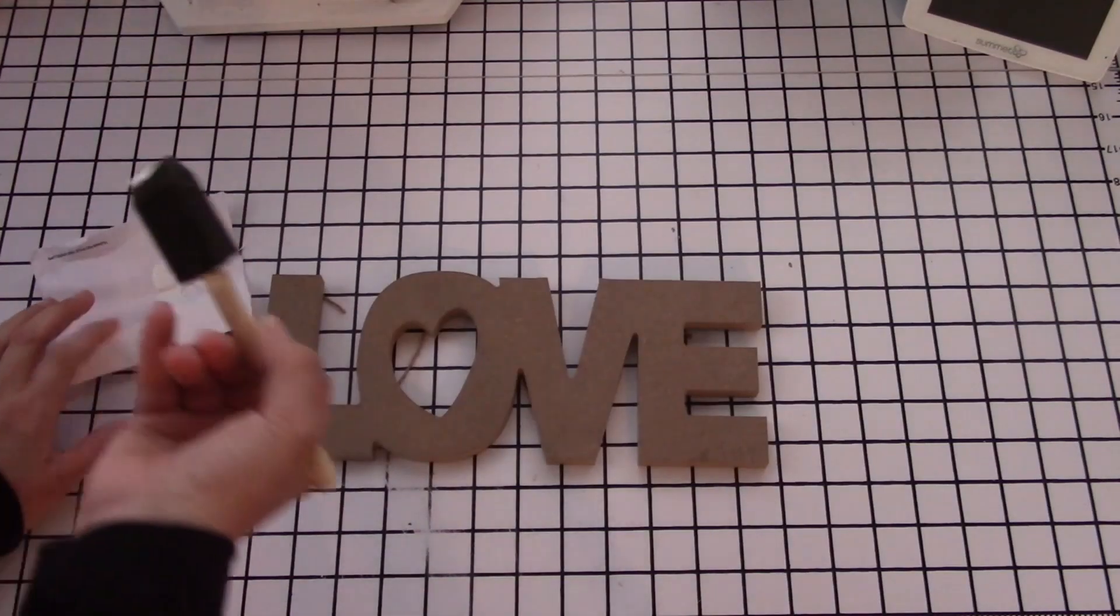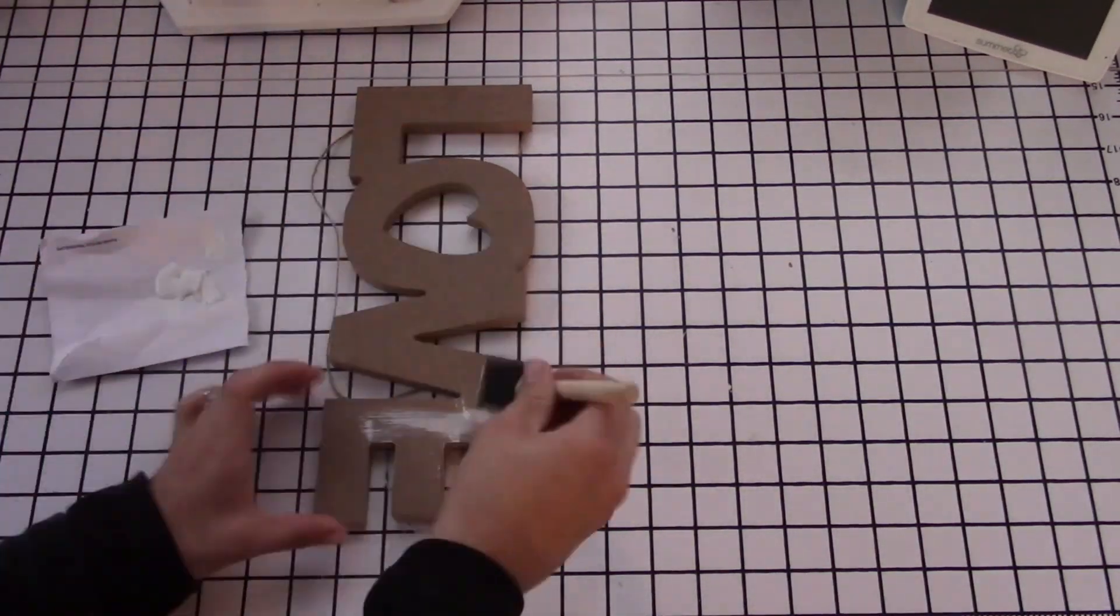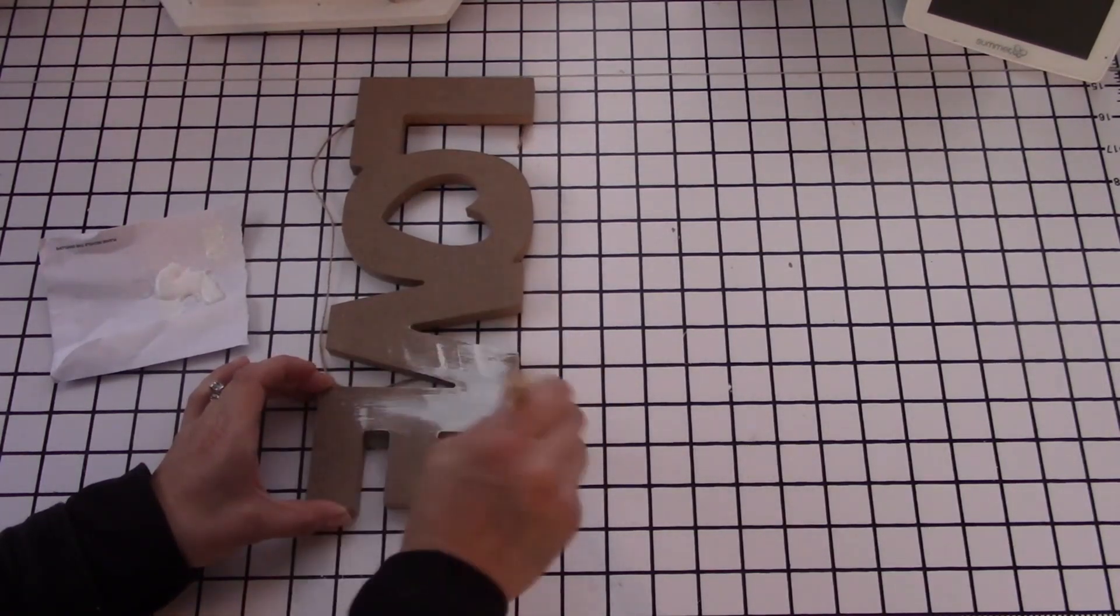Anywho, I'm starting by dry-brushing the entire sign with Waverly chalk paint in the color white. Here is a zoomed-in view for those of you who want a close-up view of this technique. I literally spread the paint out as much as possible. You can see that I pressed the sponge down on the surface to try to extract any leftover paint inside the brush.